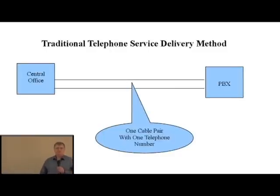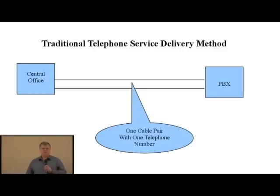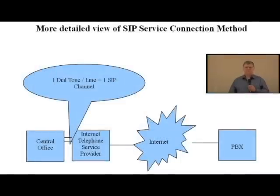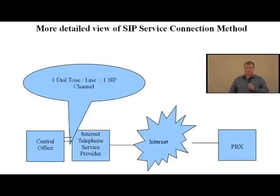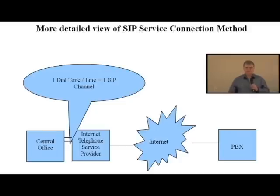In the diagram that we see here, we have the central office on the left-hand side. Between the central office and the PBX, we have a single pair — in this simple example, a single copper pair that extends one telephone number from the central office to the PBX, which would normally be terminated on a single CO line position. In the diagram up above, we have the new way of doing it. In this case, for example purposes only, the central office is delivering dial tone over a single copper pair, representing one voice channel, or one SIP channel, to the internet telephone service provider. The internet telephone service provider then makes that dial tone available to you, no matter where you might be located over the internet. And we can see there that it's extended to the PBX.